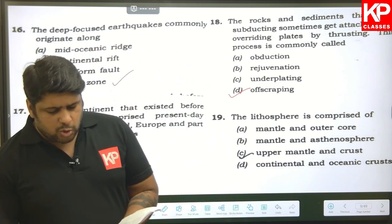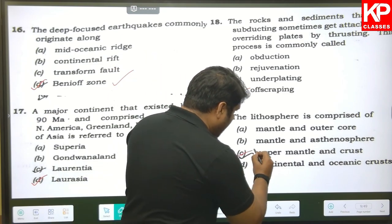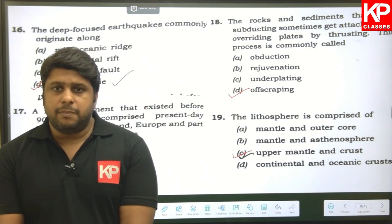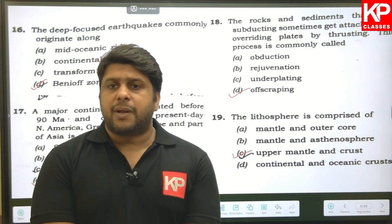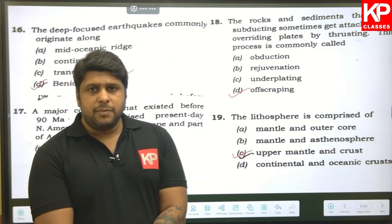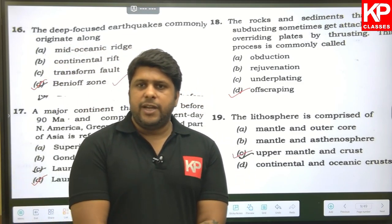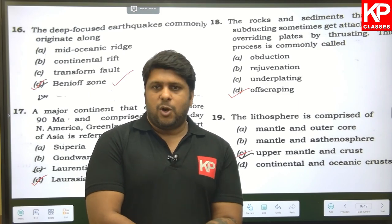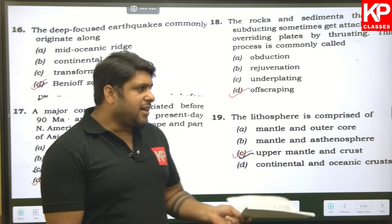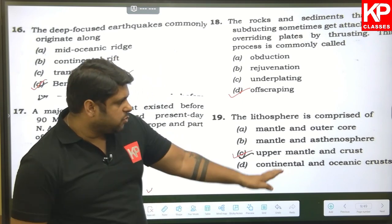Question nineteen: the lithosphere is comprised of the upper part of the upper mantle and the crust. This was given in the pre-exam where you had to select which option was right. Here there is only one matching option — upper mantle and crust — so we go with that.